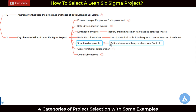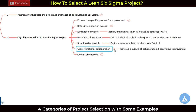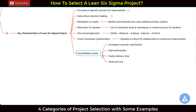DMADV is also called DFSS — Design for Six Sigma. The sixth characteristic is developing cross-functional collaboration, thereby enhancing continuous improvement. The seventh and last characteristic is that we quantify the results — which can be related to improved customer satisfaction, improved quality of products or services, faster delivery time, or reduced cost.